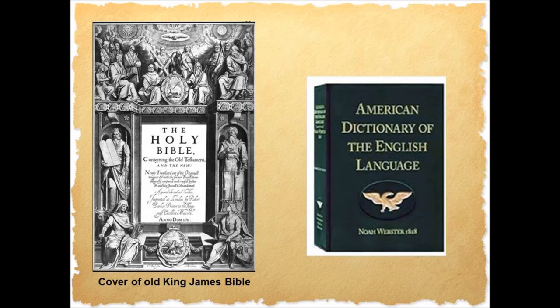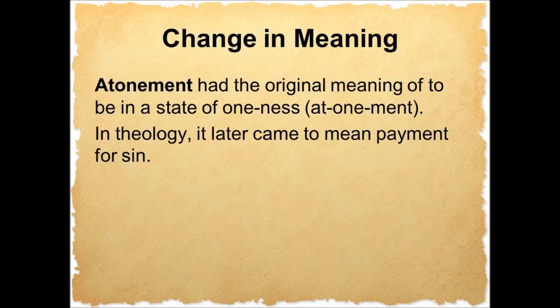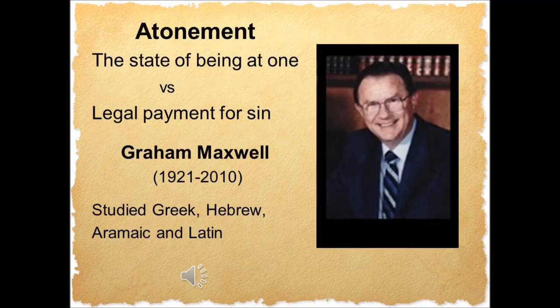So by the time the King James Version, and then many other English versions were translated, this legal thinking was well entrenched and is reflected in the various versions. Over the last few hundred years, many word meanings have undergone changes that have caused further confusion. To help sort some of this out, in The Character of God and the Gospel Glossary, reference is often made to Webster's 1828 Dictionary. Here is a good example of a word that has changed meaning. Atonement had the original meaning of to be in a state of oneness — 'at-one-ment.' In theology it later came to mean payment for sin. Graham Maxwell was the son of Arthur Maxwell, the author of the well-known Uncle Arthur's Bedtime Stories for Children. Graham well understood this use of atonement and the change in meaning.